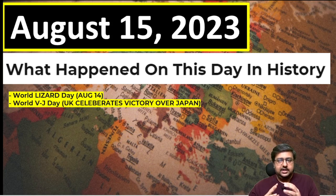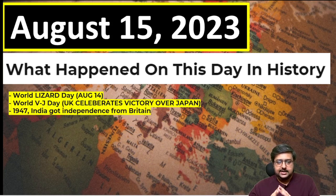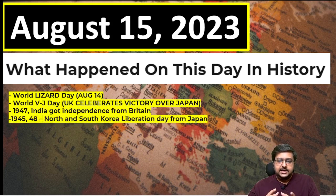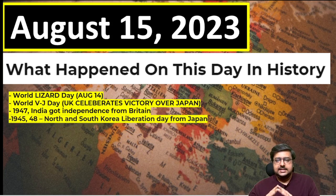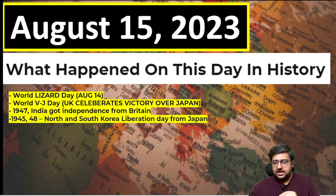We know it is India's Independence Day today, but five other countries also celebrate Independence Day on the same day. This kind of information may be useful in exams - UPSC won't directly ask it but you can use it for GK. India got independence from Britain. In 1945, Japan surrendered, and under Japan's rule there was Korea. So both North Korea and South Korea celebrate this as Korean Liberation Day - on 1948 August 15th, the exact day they chose to celebrate.